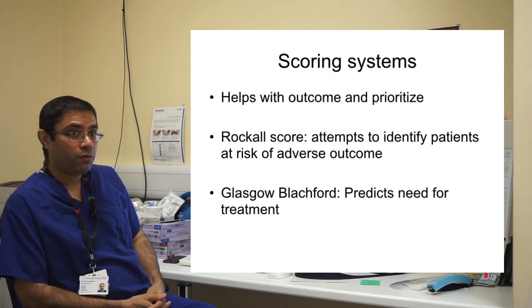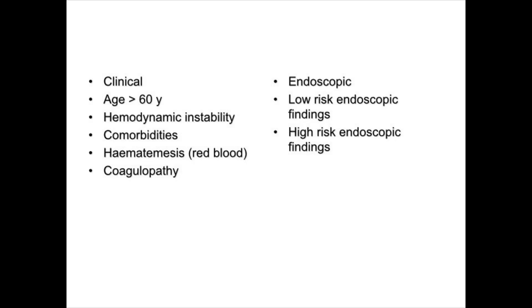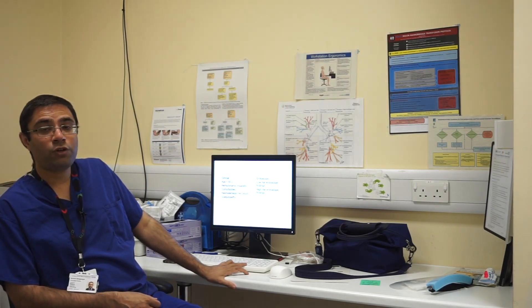There are various scores that people use. The two most commonly used are the ROCKALL and the Glasgow Blatchford. Both involve two parts: clinical assessment done during initial history taking and examination, and an endoscopic component done during or after endoscopy. The clinical status includes age, haemodynamic instability, co-morbidities, haematemesis, and coagulopathy. Endoscopic features include low-risk or high-risk findings, which help in future management and predicting outcome.